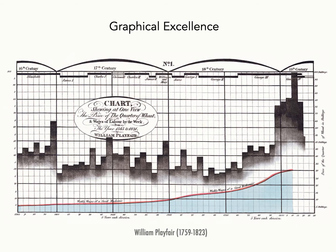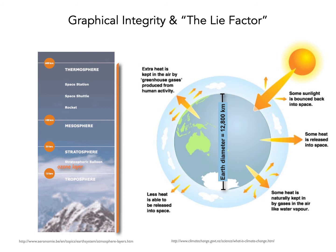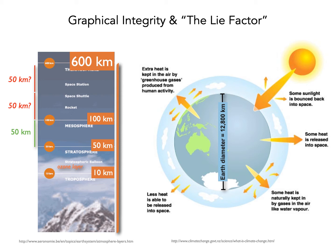The next point is graphical integrity and the lie factor. Here's a graphic from the internet showing the atmosphere on Earth. The one on the left gives a schematic view of the different layers, where the horizontal lines represent 10, 50, 100, and 600 kilometers above the surface. But that's not a consistent scale. The space shuttle flying way up here should be at hundreds of kilometers, but based on the bottom marker it looks like it's only at tens — that should be 50, 50, and we should be at 150, not 600.